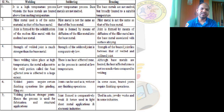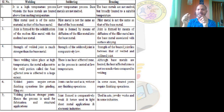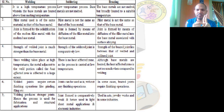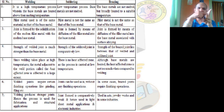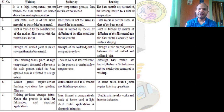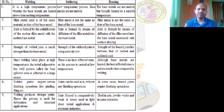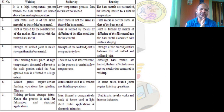In welding, the joint is formed by solidification of molten filler metal with molten base metal. Both the filler and the base material are the same, so they mix together in a molten state. In soldering, the joint is formed by diffusion of the filler metal into the base material. In brazing, the joint is formed by diffusion of the filler metal into the base metal associated with surface alloying.